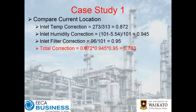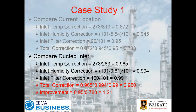Your humidity correction is pressure minus the vapour pressure of the water, over pressure. Then you have the inlet filter correction. So we have a total correction which is the product of the three — we're down at 0.783. In other words, it's 21.7% down on capacity.